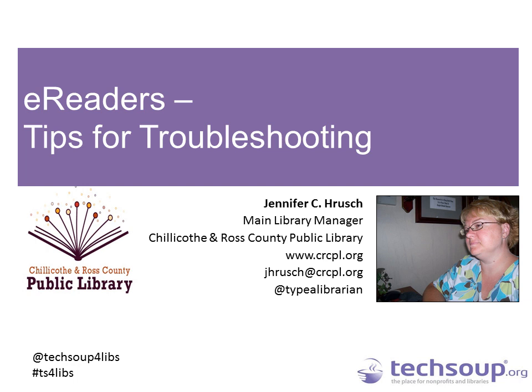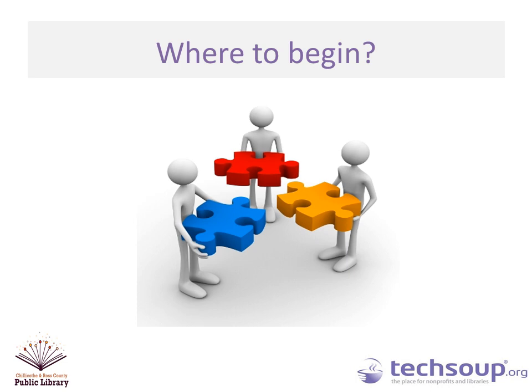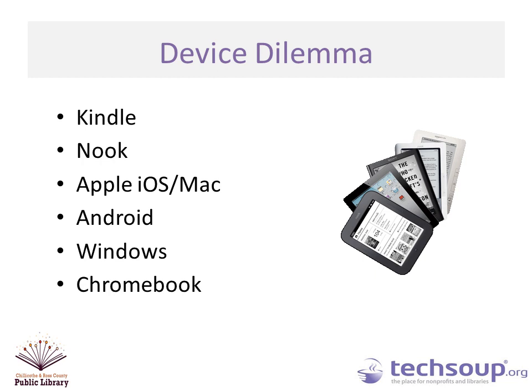So someone comes in with their e-reader — where do you begin? Getting e-readers to work generally takes three pieces, and if those three pieces don't fit together, it's just not going to work. The first piece is the device. There are so many ways to figure out what device someone has. Once you figure out the operating system, most operating systems work the exact same way, so your knowledge will transfer from device to device. You need to know the type of device, the operating system, how to get to the browser, how to get to the app store, and where the settings are.